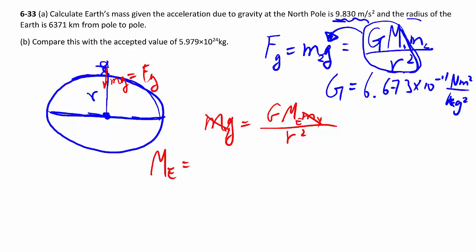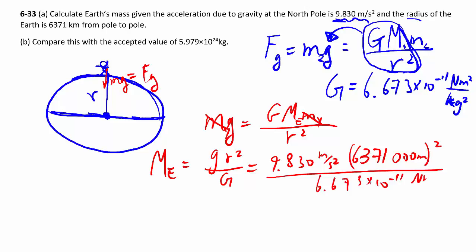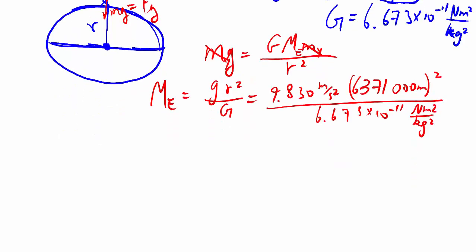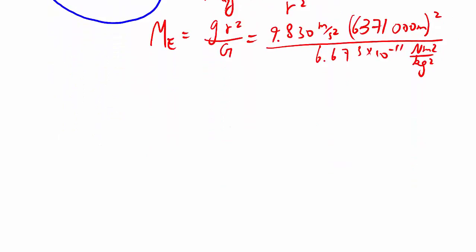Rearranging, you can get ME is equal to g R squared over big G, then the rest is just plug in numbers. That's in kilometers, so I'm going to put three zeros in the back. And then you should be done.